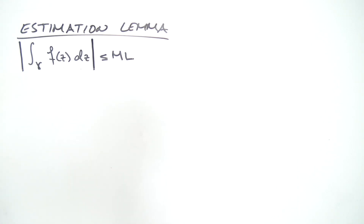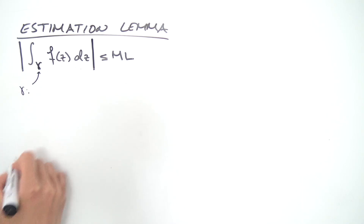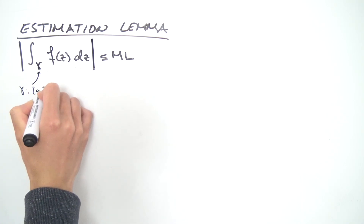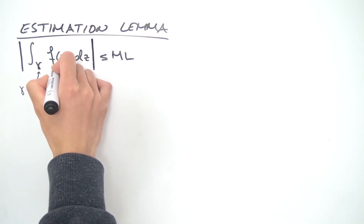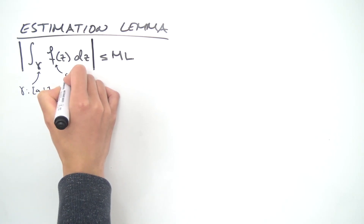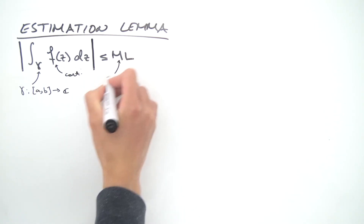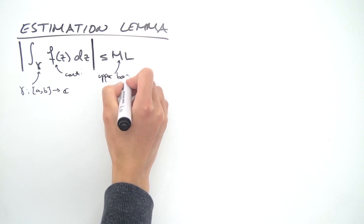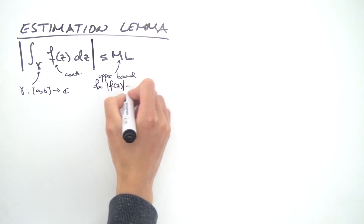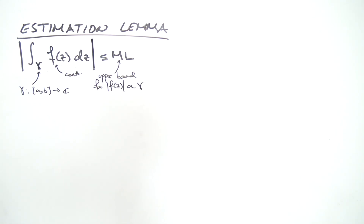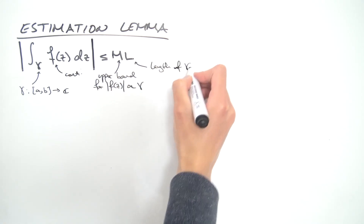Let me go into more detail about what each part means. The curve gamma is a curve in the complex plane parametrized on an interval [a, b]. The function f is a complex function that must be continuous. M is an upper bound for the absolute value of f(z) on the curve gamma, and L is the length of gamma.